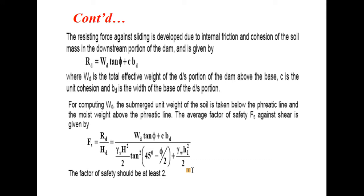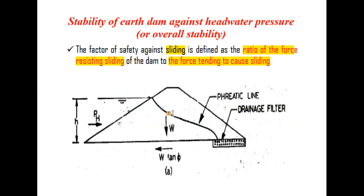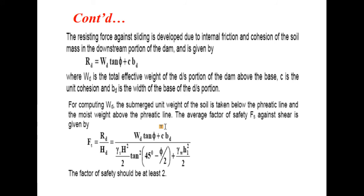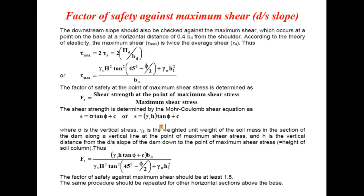For computing W_D, the submerged unit weight of soil is taken below the phreatic line and the moist unit weight is taken above the phreatic line. The factor of safety against shear is therefore FS equals RD divided by HD. The factor of safety must be at least 2, the same as for overall stability against headwater pressure.